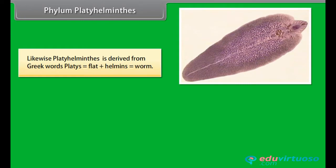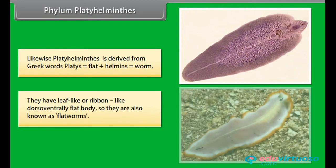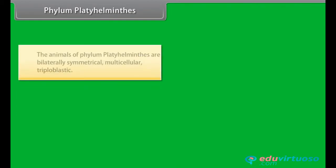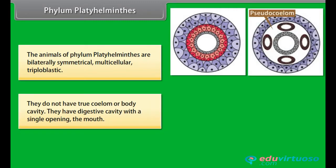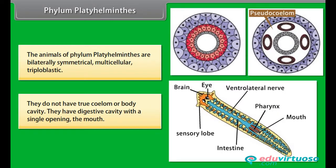Platyhelminthus is derived from Greek words platys, meaning flat, plus helminthus, meaning worm. They have leaf-like or ribbon-like, dorso-ventrally flat body, so they are also known as flatworms. The animals of phylum Platyhelminthus are bilaterally symmetrical, multicellular, and triploblastic. They do not have a true coelom or body cavity. They have a digestive cavity with a single opening, the mouth.